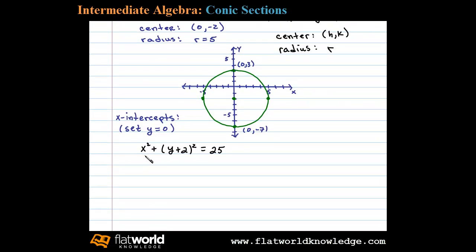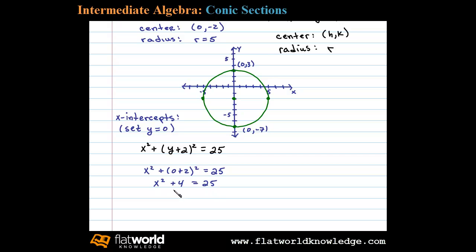The original equation was x squared plus the quantity y plus 2 squared equals 25. Setting y equal to 0, we're left with x squared plus 0 plus 2 squared equals 25, or x squared plus 4 equals 25. Solving by extracting square roots, we isolate x squared to get x squared equals 21.